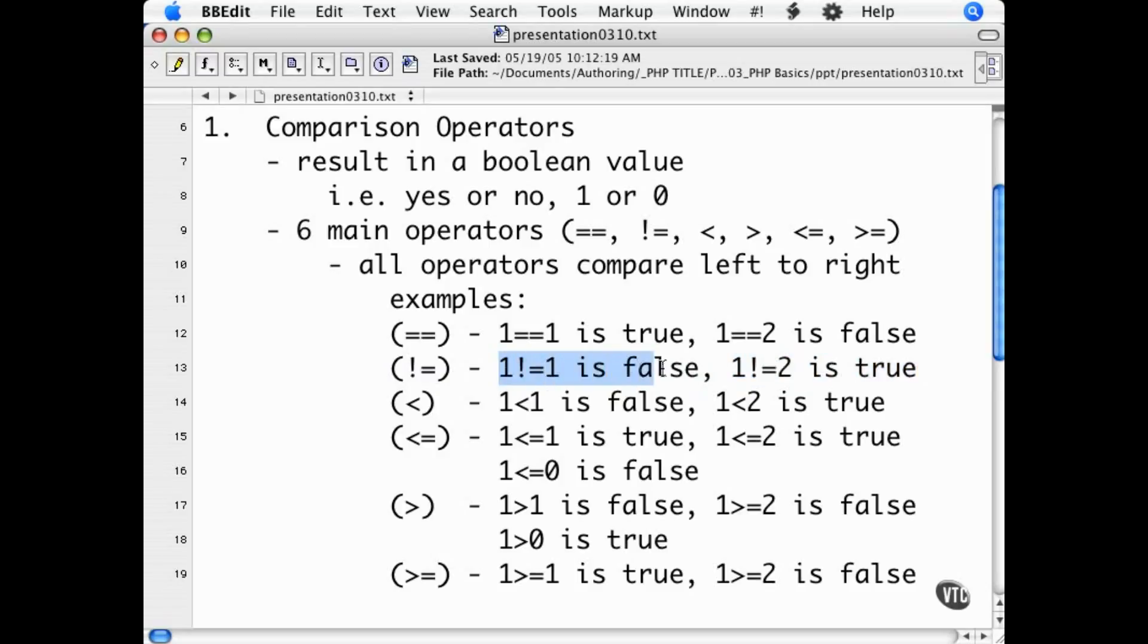If the left side equals the right side, it returns false. With the less than operator, if the left value is less than the right, it returns true. If the left value is not less than the right, it returns false.